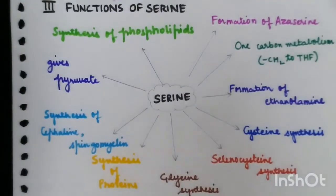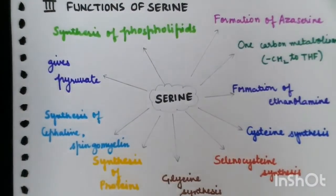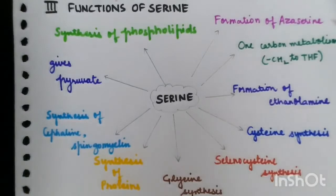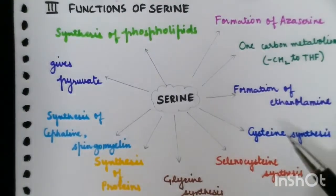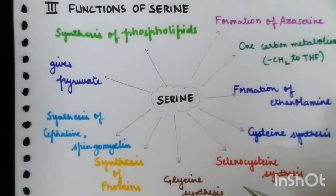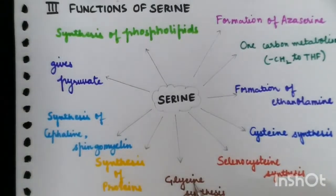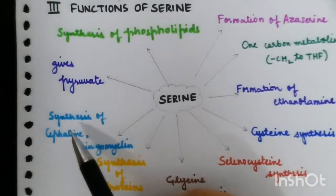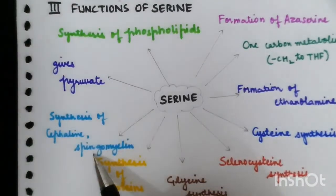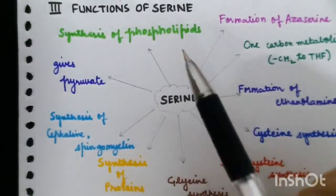Now we talk about the functions of serine. These include: formation of azoserine, which is an anti-cancer drug; one carbon metabolism; formation of ethanolamine; cysteine synthesis; selenocysteine synthesis — serine is the 21st amino acid; glycine synthesis; synthesis of proteins; synthesis of choline and sphingomyelin; it gives pyruvate; and synthesis of phospholipids.